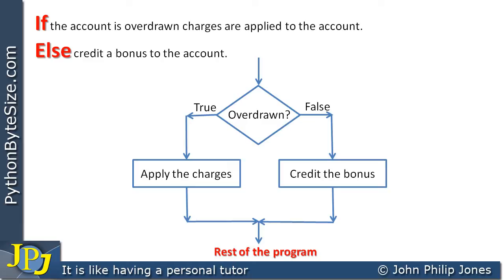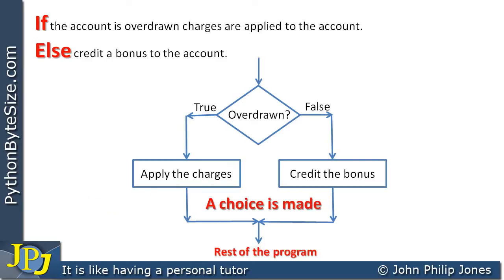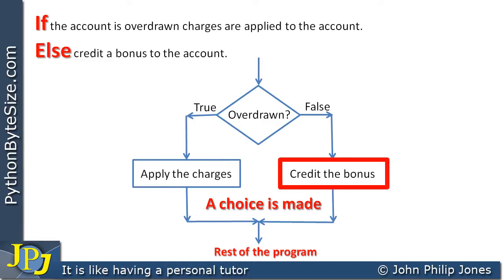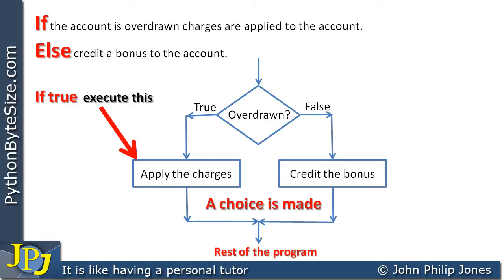Let's use a red dot to show both flows through this flowchart. When we're overdrawn, you come in this direction, apply the charges, and carry on with the rest of the program. When we have money in the bank at the end of the day, we go in the false direction, credit the bonus to the current account balance, and then carry on with the rest of the program. For the if-else construct, a choice is made between two paths: the true path where we apply charges, and the false path where we credit the bonus.